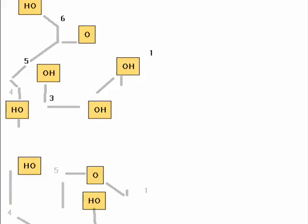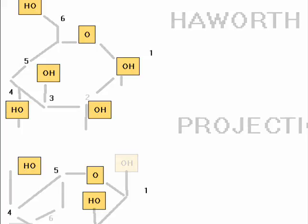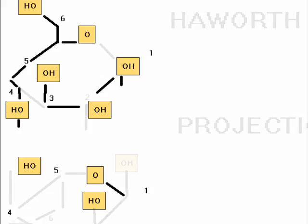A thicker line indicates atoms that are closer to the observer. In the example on the right, atoms 2 and 3 and their corresponding OH groups are the closest to the observer.